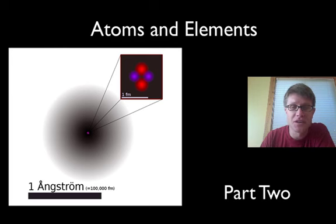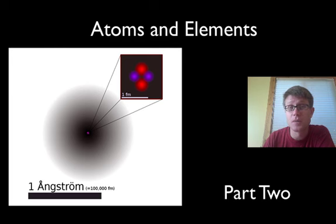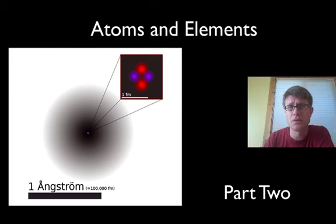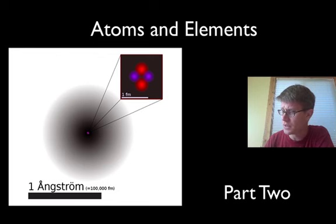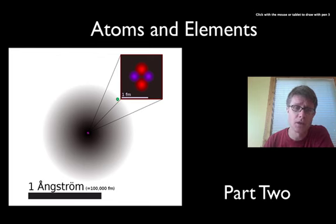Hi. This is Mr. Anderson and this is part 2 of Atoms and Elements. In part 1 I talked about the history of the atom and how it came to be known as the atom. In this one I'm going to talk about what do we have in here.